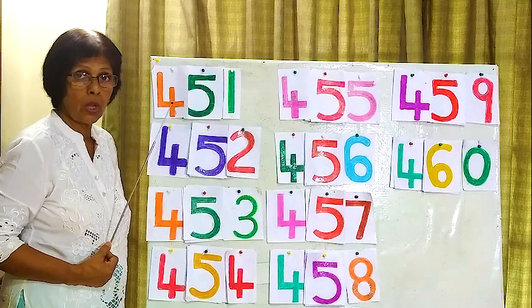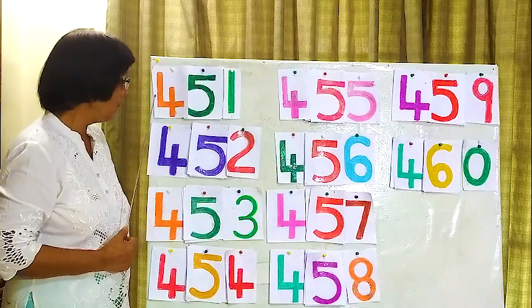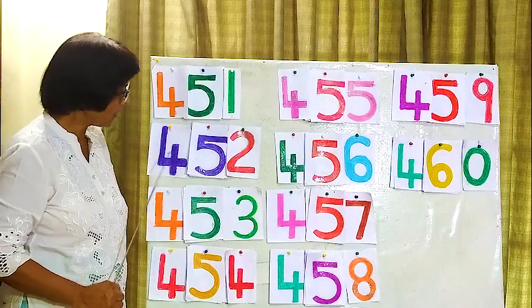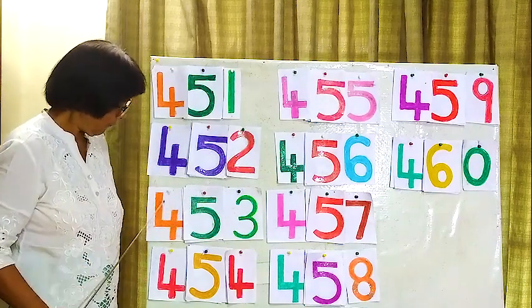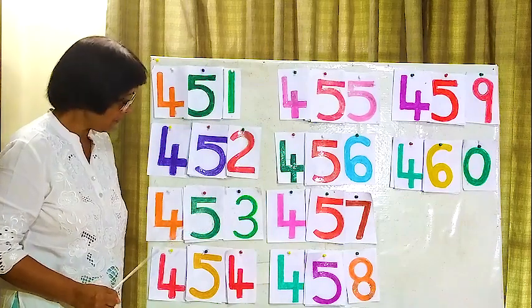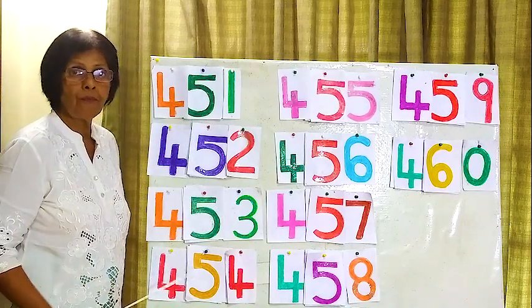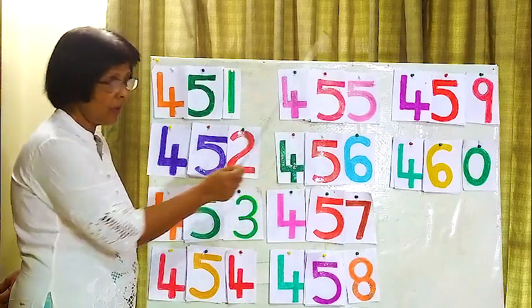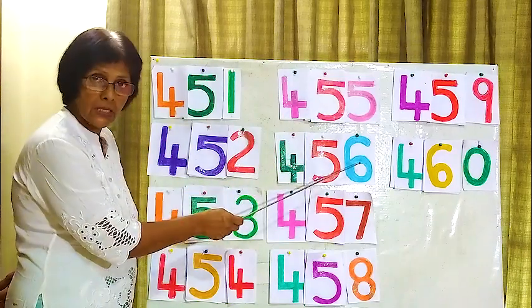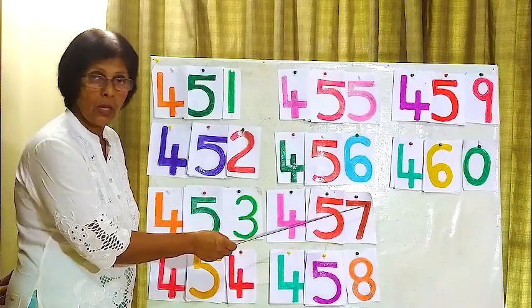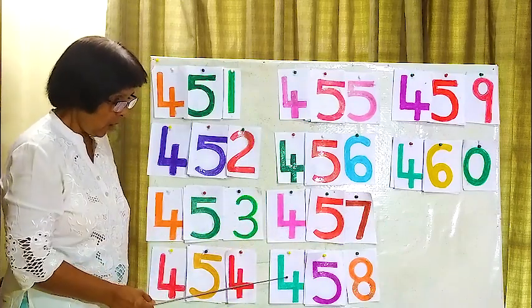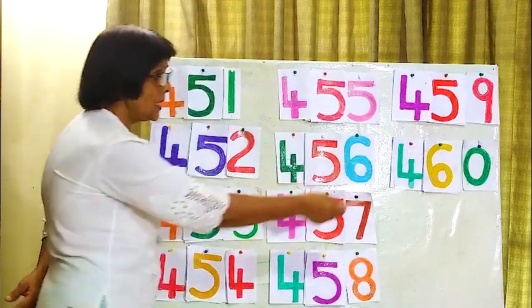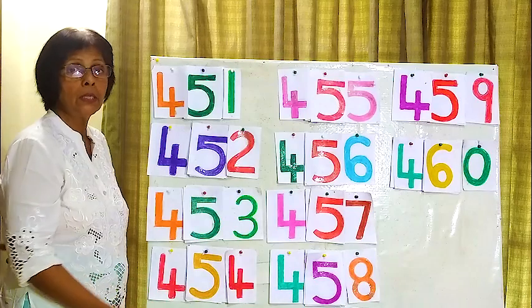Okay, we will read all the numbers together in order. 451, 452, 453, 454, 455, 456, 457, 458, 459, 460.